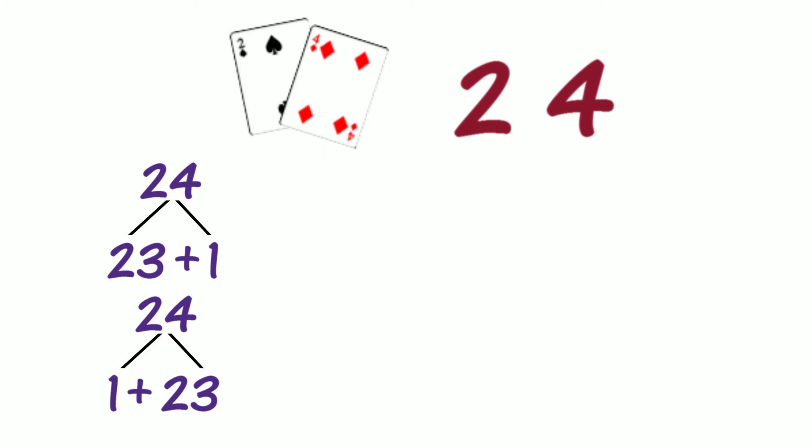Is this the same partition? Have the parts just swapped places? Did we partition 24 using place value? Did we partition 24 into tens and ones? No, we didn't partition 24 into tens and ones, so we didn't partition 24 using place value.